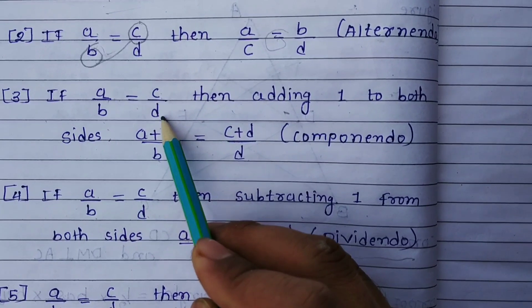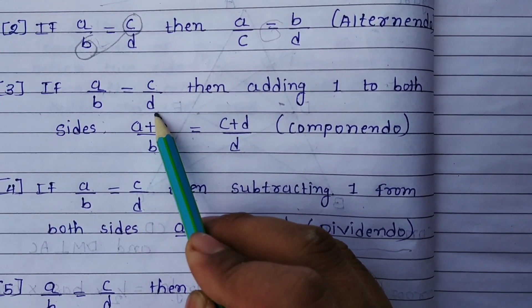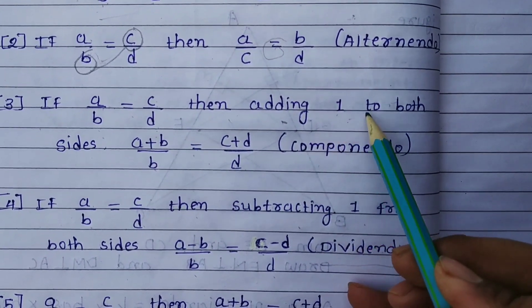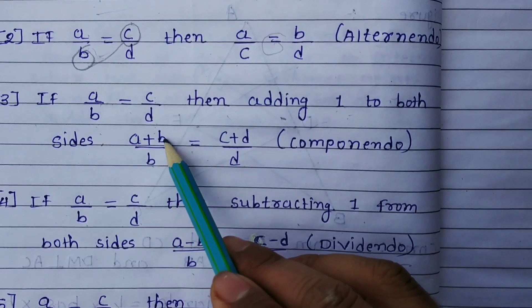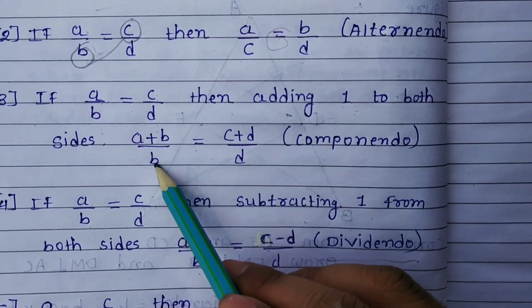Now see the third result: a upon b is equal to c upon d. Then adding 1 to both sides, the answer is a plus b upon b.